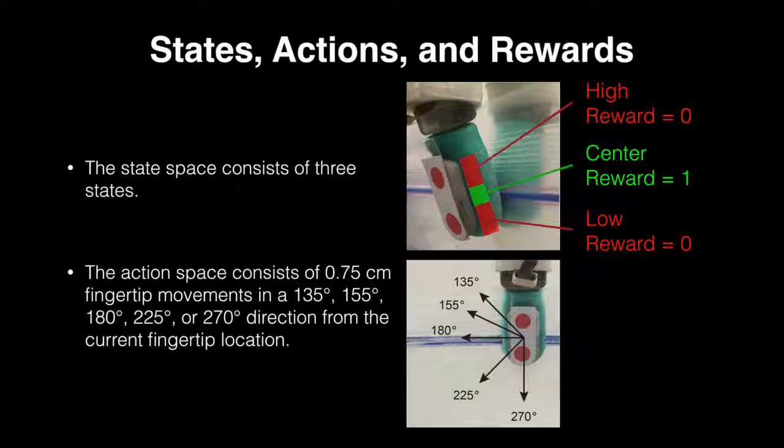The robot learned policies to perform the contour-following task using two different reinforcement learning algorithms, Q-Learning and Contextual Multi-Armed Bandits. Both algorithms use the same state and action spaces and goal-directed reward structure.